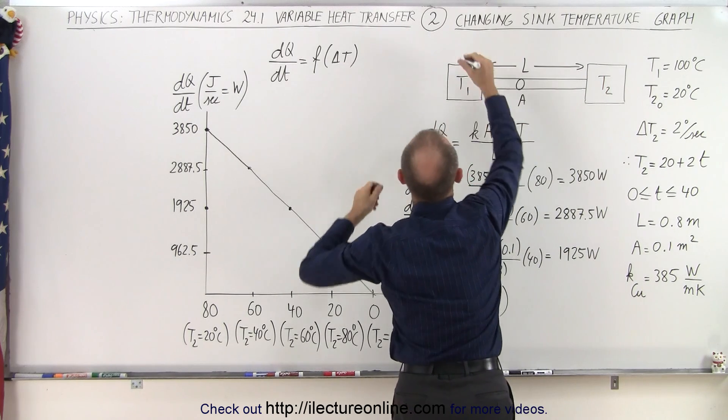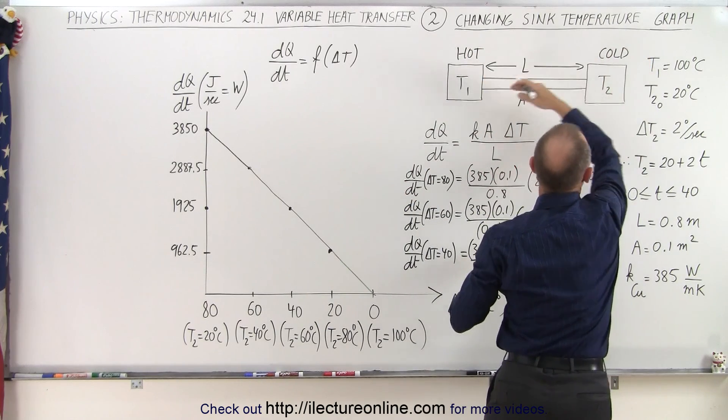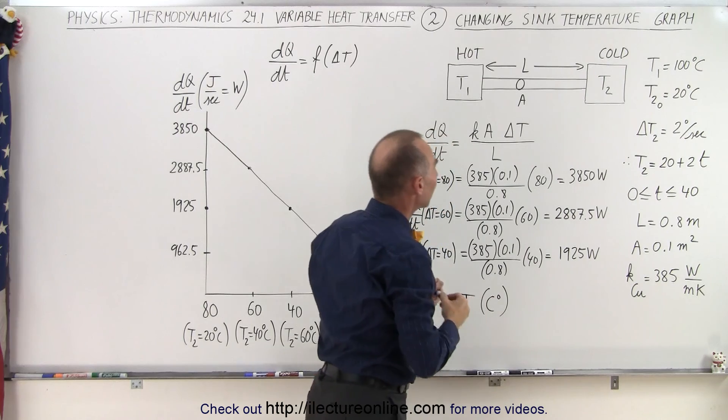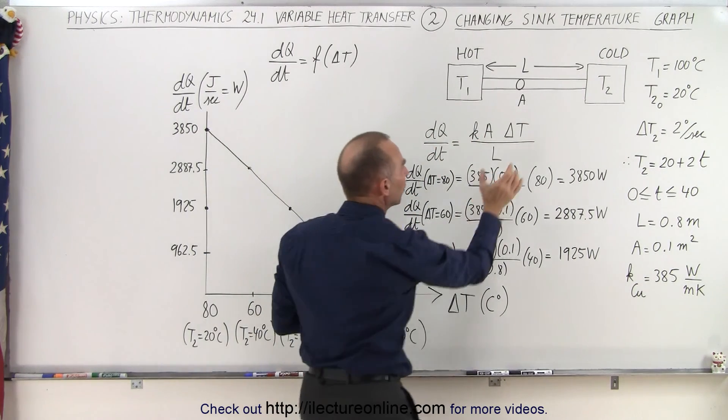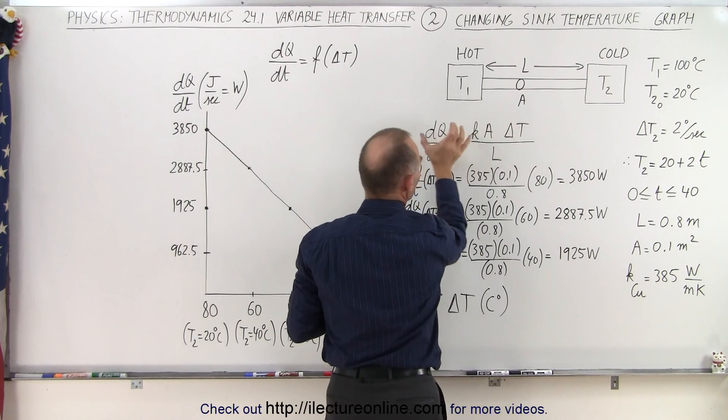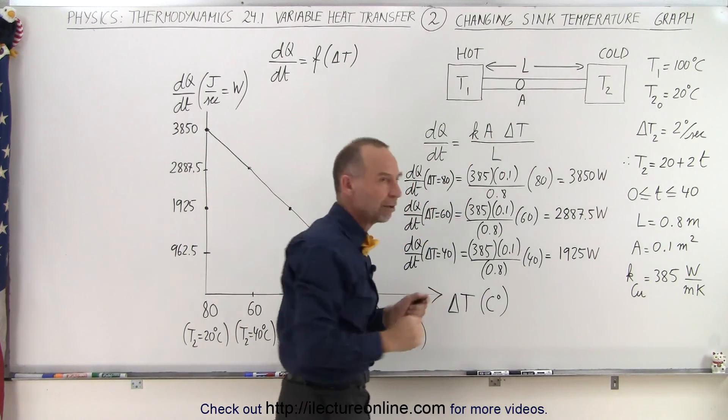So this would be the source, this is the hot, and that would be the sink, which is therefore the cold. And heat will then transfer, and notice that since Ka and L are all constants, the only thing that can change here is the difference in the temperature. And so therefore, dQ/dt is proportional to the difference in the temperature.